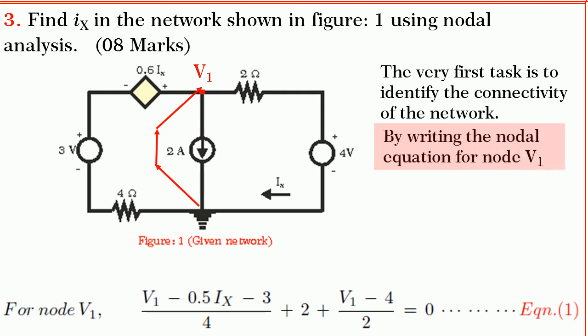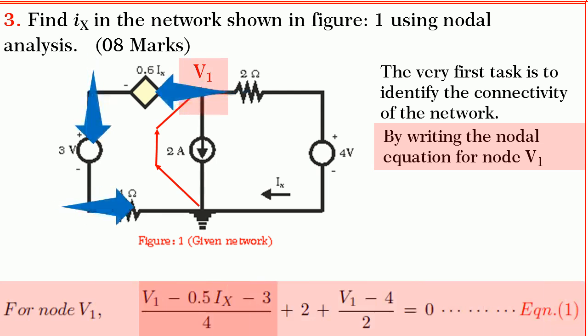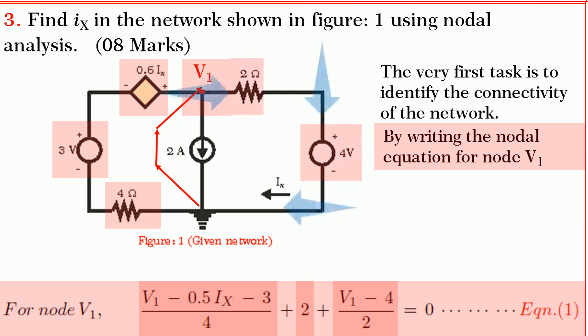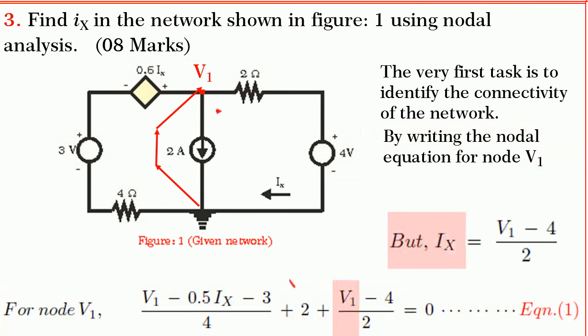By writing the nodal equation, we get V1 minus 0.5 ix minus 3 divided by 4 plus 2 plus V1 minus 4 divided by 2 is equal to 0. But we know that ix is equal to V1 minus 4 divided by 2.